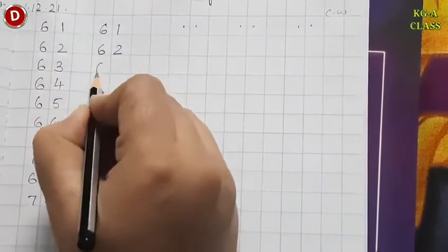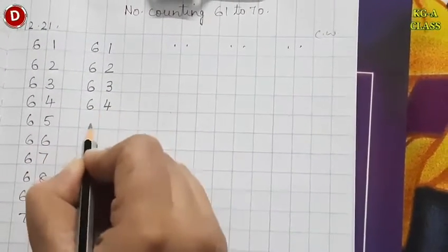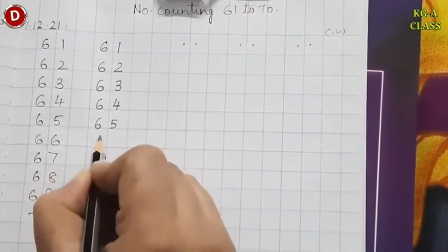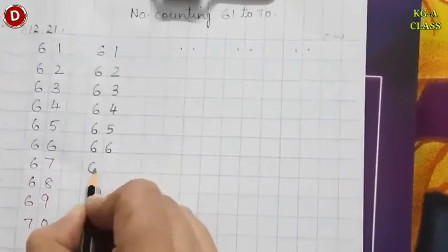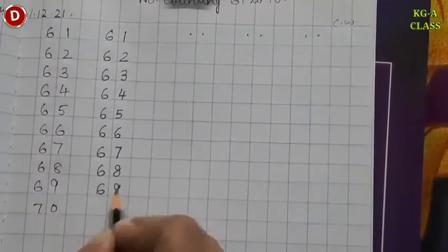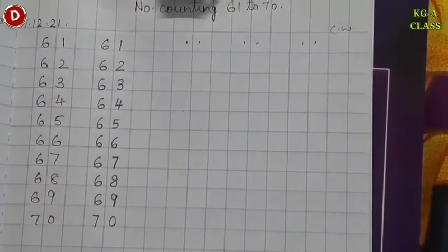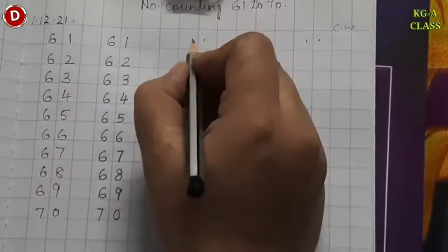6, 2, 62. Write on the blue line. 6, 3, 63. 6, 4, 64. 65. 6, 6, 66. 6, 7, 67. 6, 8, 68. 6, 9, 69. And then 70, 70. Again, I will leave the next line. Look here.